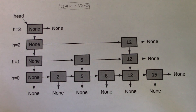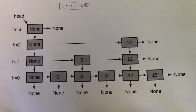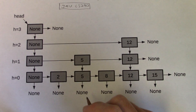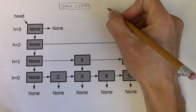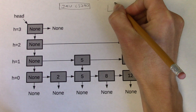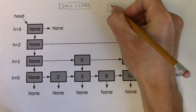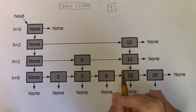In this video I'm going to work through a quick example of inserting into a skip list. For the purposes of this example, we'll assume that I'm going to insert the element 9 into this existing skip list.